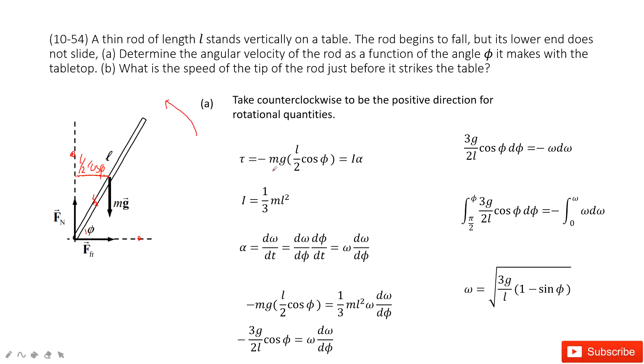So the torque is mg times L divided by 2 cosine phi. And there is a negative sign. It tells us the direction for this torque. Because we consider counterclockwise as positive, it falls down, so negative.